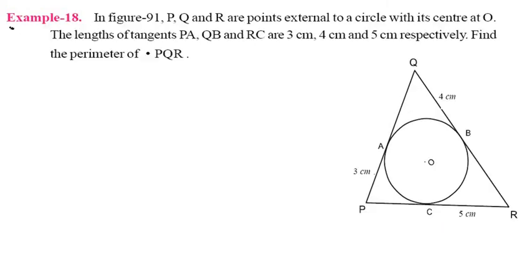Example 18: In figure 91, P, Q, R are points external to a circle with center O. The lengths of tangents PA, QB, and RS are 3 centimeters. Find the perimeter of triangle PQR.